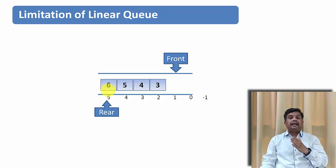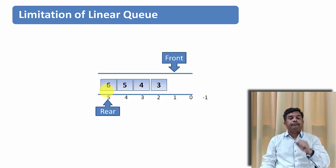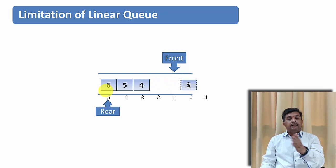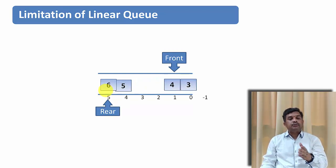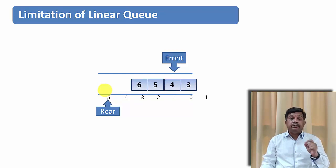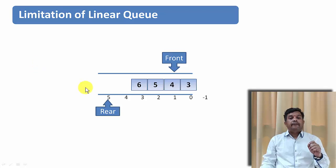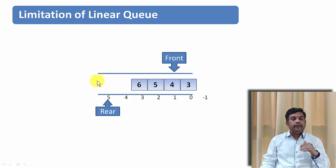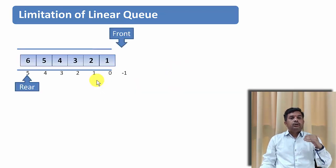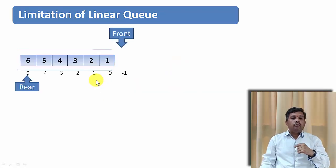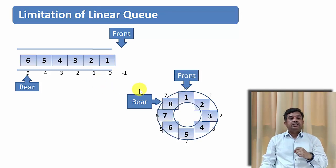In order to enter more data, we need to shift all elements and readjust front and rear. So elements 3, 4, 5, and 6 are shifted, and the rear and front pointers also need to be shifted. A vacant place is then created at the rear and we can enter more data. This is one limitation of a linear queue — in order to overcome it we need a circular queue.